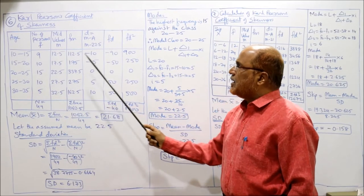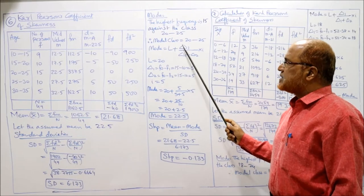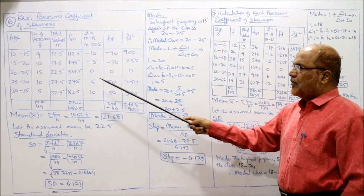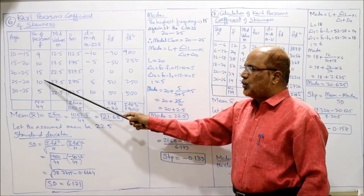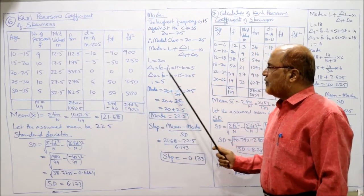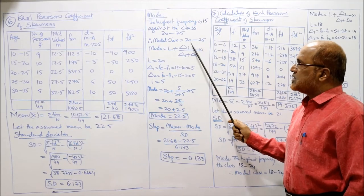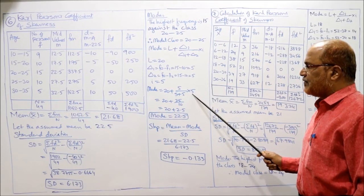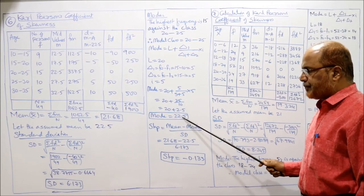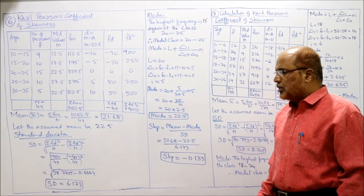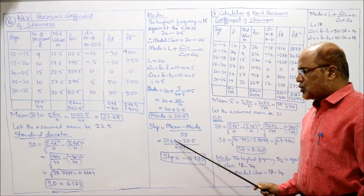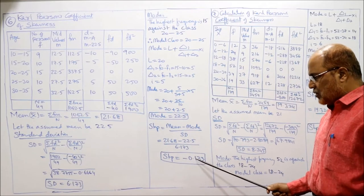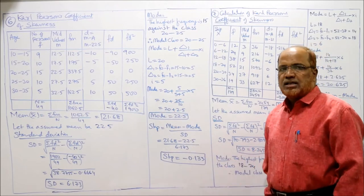Mode formula: L + (Δ1/(Δ1+Δ2)) × i. Lower limit L=20, Δ1 = f0−f1 = 15−10 = 5, Δ2 = f0−f2 = 15−10 = 5, i=5. Mode = 20 + (5/10)×5 = 22.5. Now SKP = (Mean − Mode)/SD = (21.68 − 22.5)/6.173 = −0.133. This is the end of problem number 6.